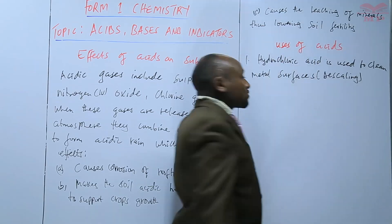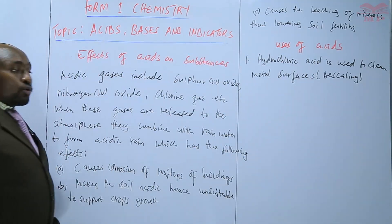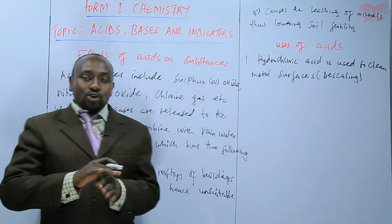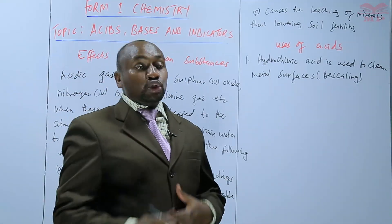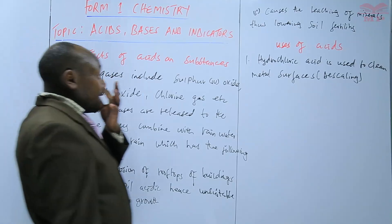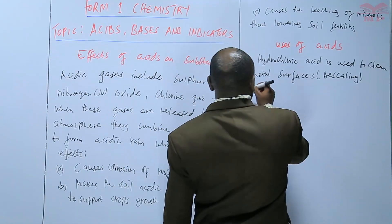That process is called descaling. Cleaning of the surfaces of metals, especially for those metals that have rusted. They have formed some rust, or some scales, or some corrosion on their surface. Hydrochloric acid is used to clean those surfaces.